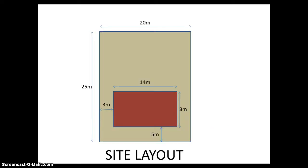I'll just remind you of the site layout for our project. It's a rectangular site measuring 20 meters by 25 meters on which sits a rectangular bungalow — just a simple rectilinear shape — measuring 14 meters by 8 meters. It's positioned 5 meters in from the front of the site and 3 meters in from either side. It's quite important to note that the bungalow must be positioned exactly 3 meters in from the boundary at the side and exactly 5 meters in from the boundary at the front.